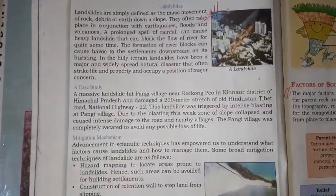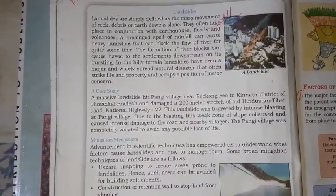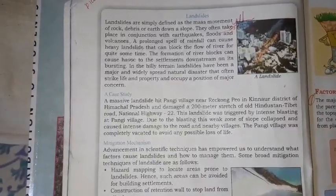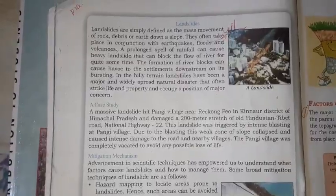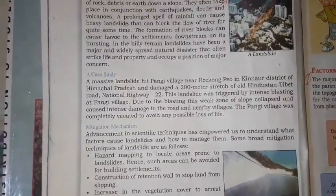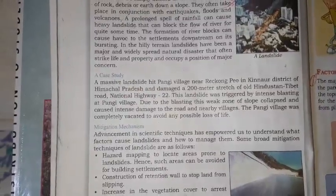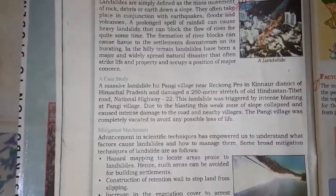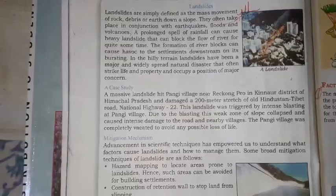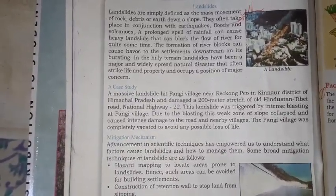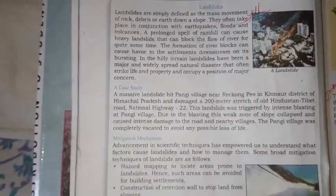The landslide was triggered by intense blasting at Panji village. There was huge damage to the road and nearby villages. The walls of upper areas were brought down and roads were destroyed. The village was completely evacuated to avoid any possible loss of life, and five villages were separated to protect the people.